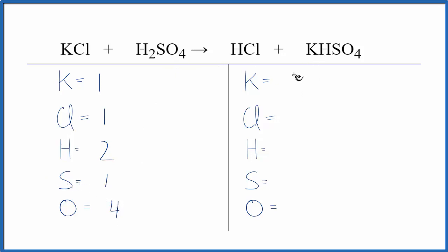On the product side, we have one potassium, one chlorine. We have one hydrogen here, plus we have one hydrogen here. So you have to make sure you count both of those, one sulfur and four oxygens.